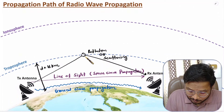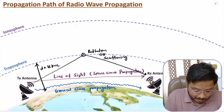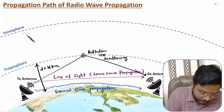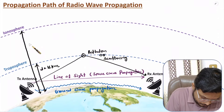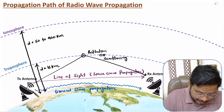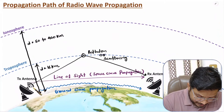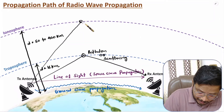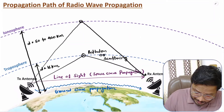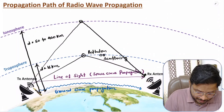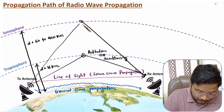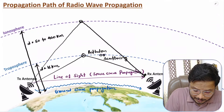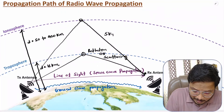We also have the ionosphere, which is at a height of 50 to 400 kilometers. Whatever signal we transmit into space will go towards the ionosphere, and from the ionosphere there will be reflection of the signal back to the earth's surface, where it will be received by the receiving antenna. So whatever EM waves are reflected back from the troposphere or ionosphere and received by the receiving antenna — this mode of propagation is referred to as sky wave propagation.